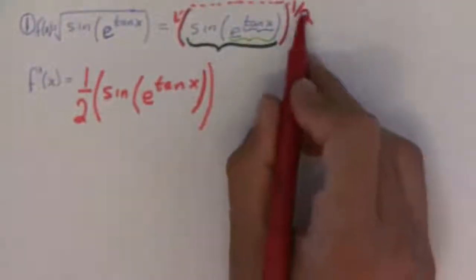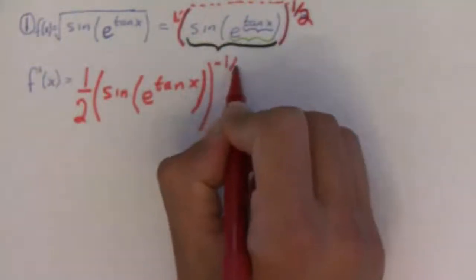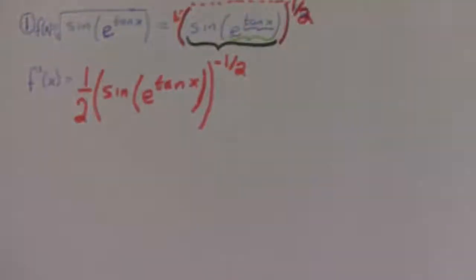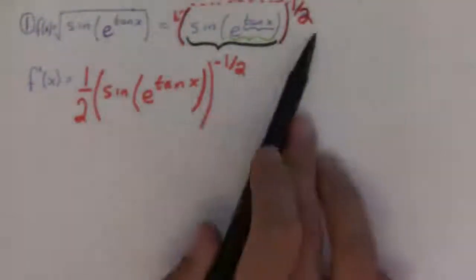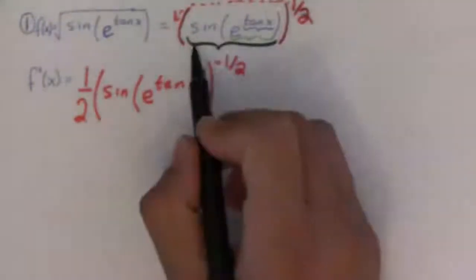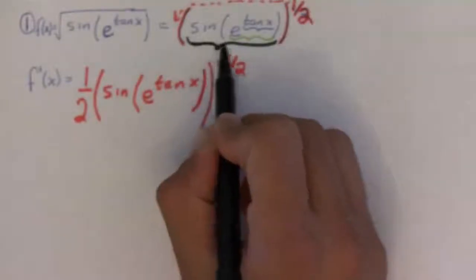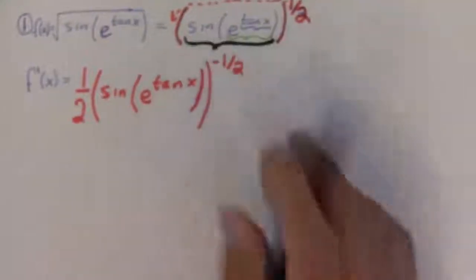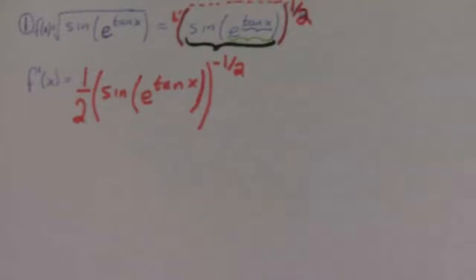Okay. And then you subtract one, so this is to the negative 1 half. Okay, now that I've gotten the derivative of that, I move in one level.